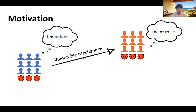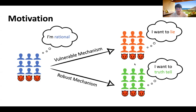In the first case, your mechanism is vulnerable. As a result, the rational agent will want to lie to maximize their payment, and the data you collected will have low quality. In the second case, your mechanism is robust, and the rational agent still wants to tell the truth even though there is a fraction of adversarial agents. In this case, we are good.